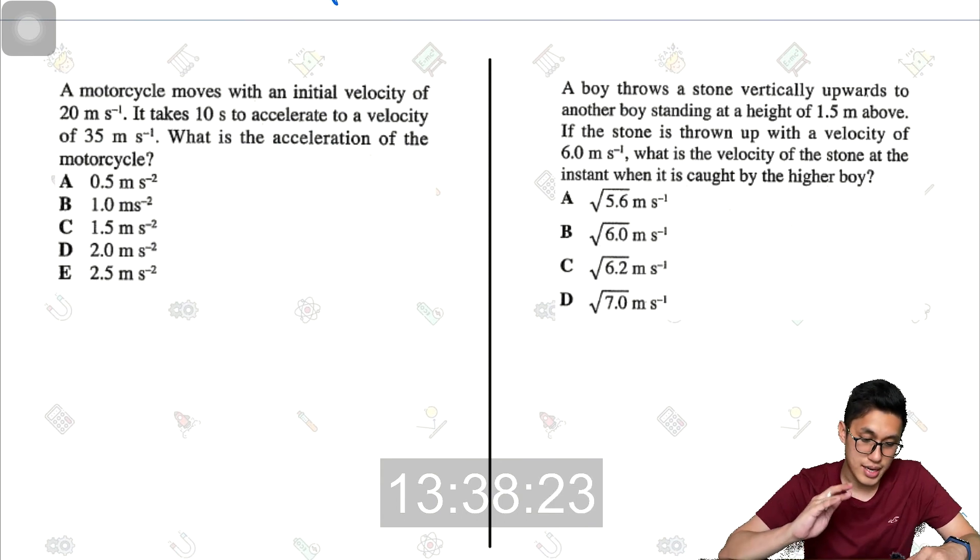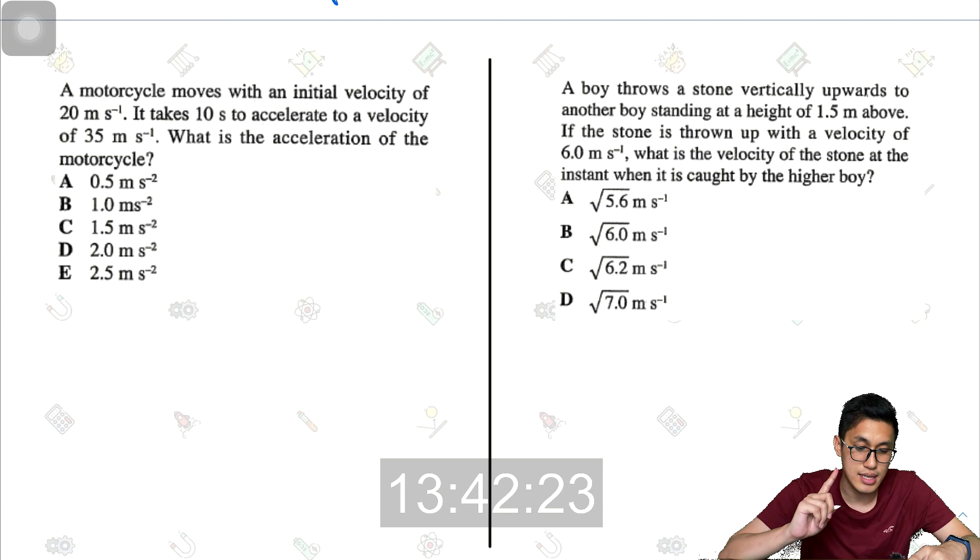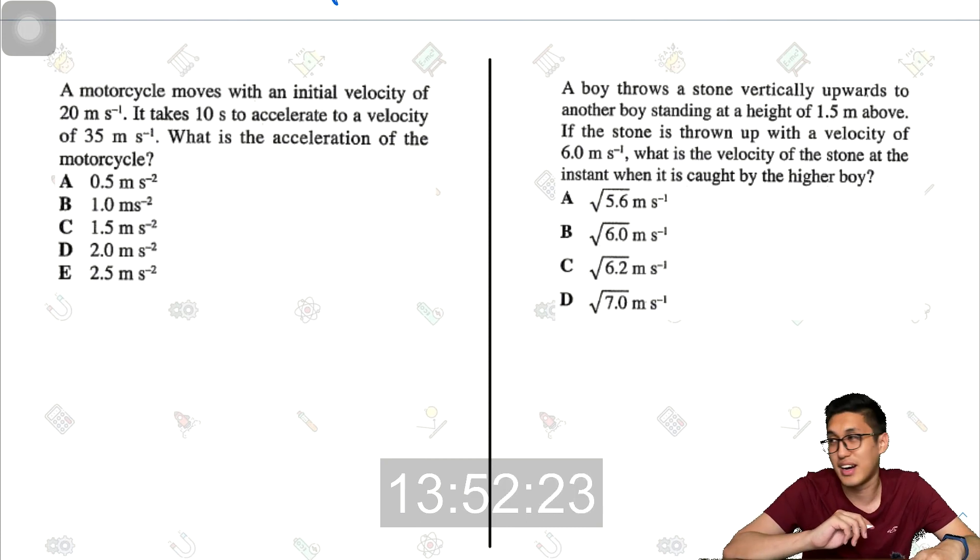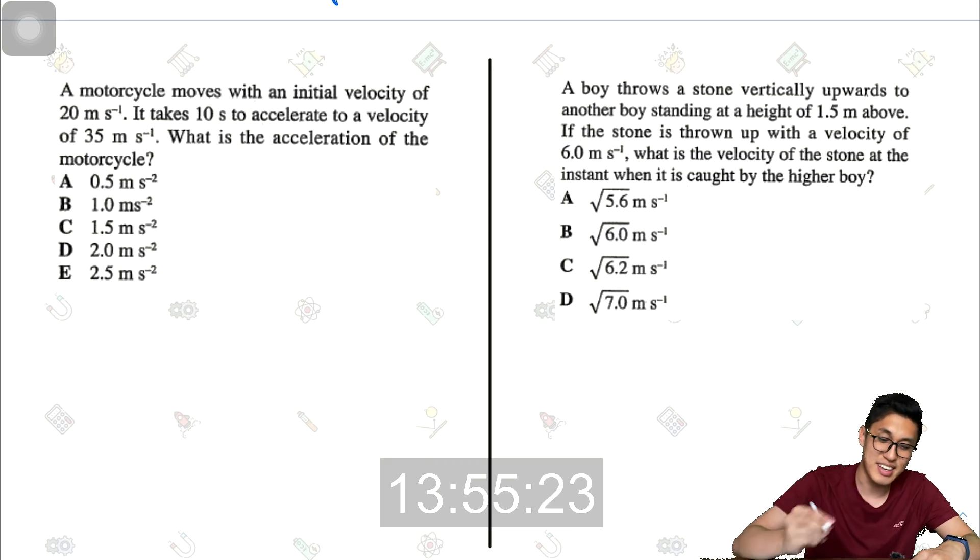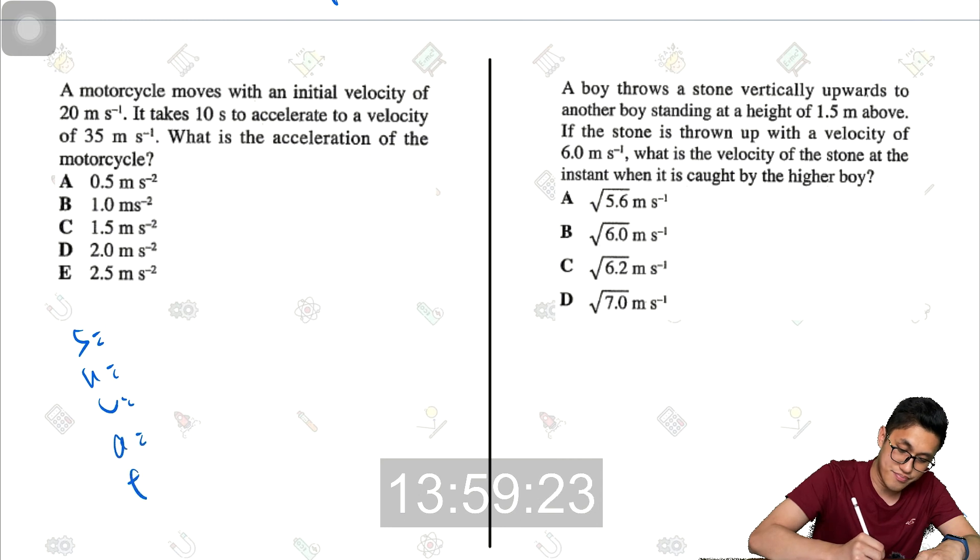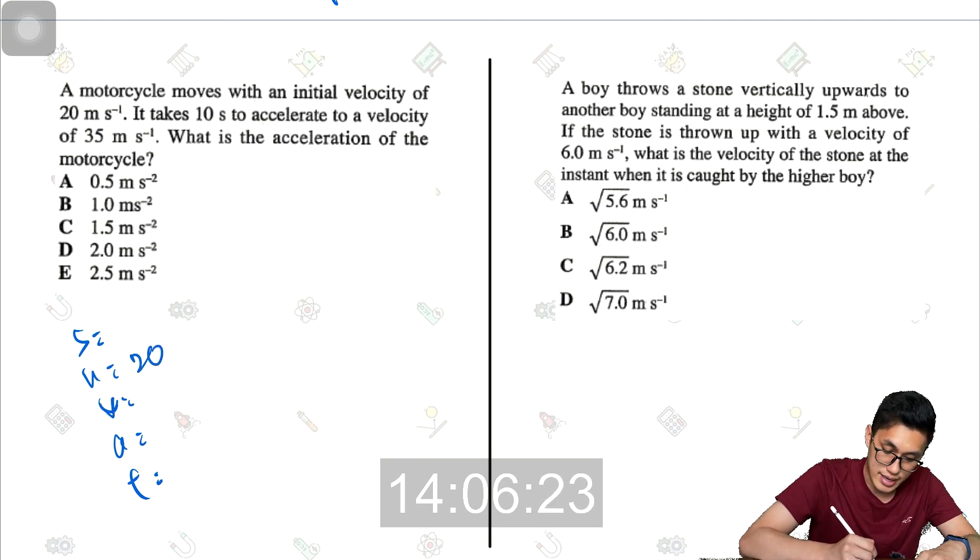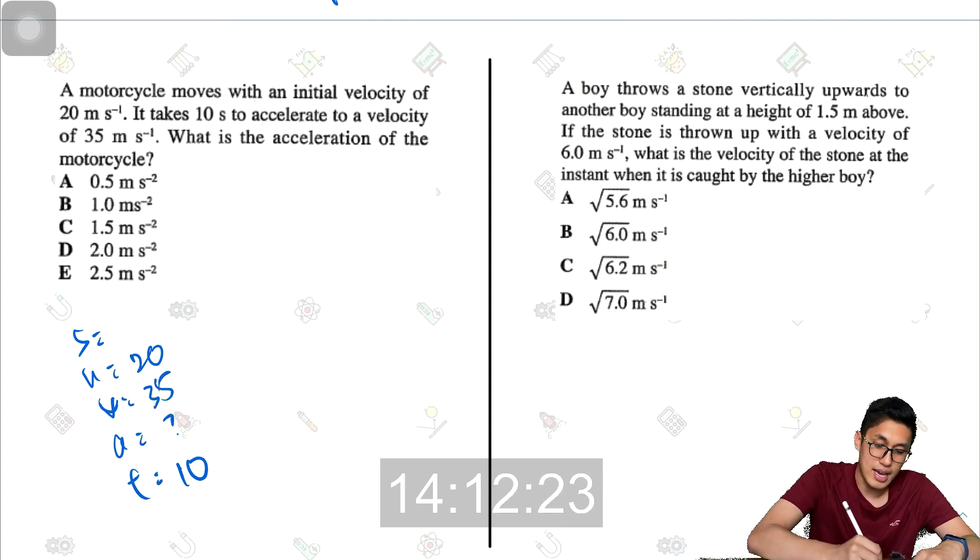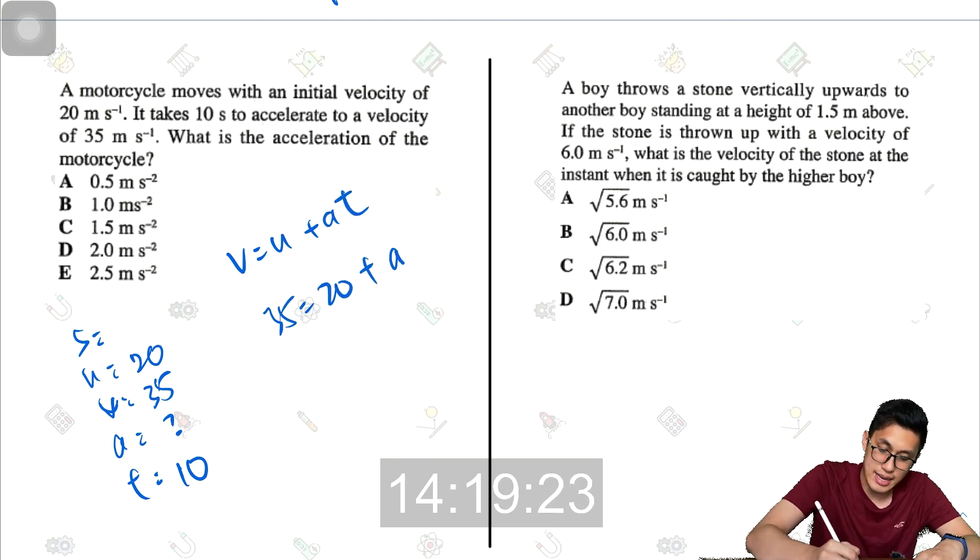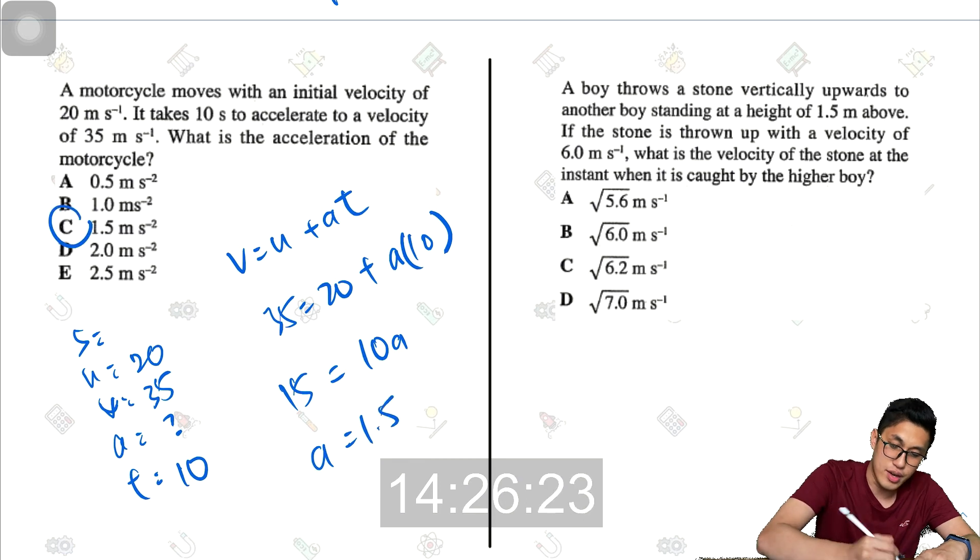Next question. A motorcycle moves with an initial velocity of 20 meters per second. It takes 10 seconds to accelerate to a velocity of 35 meters per second. What is the acceleration of the motorcycle? Again, SUVAT. If you haven't watched my SUVAT video, 5 minutes physics, remember to watch that also. So S is not given. Initial velocity, 20. 10 seconds to accelerate. That's 10. And final velocity is 35. So we're trying to find the A. I'll use V equals U plus AT. 35 equals 20 plus A times 10. So 15 equals 10A. So A should be 1.5 meters per second squared.